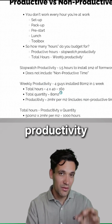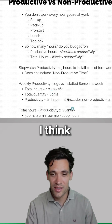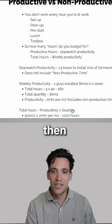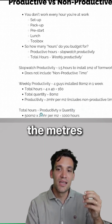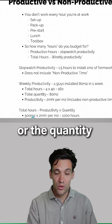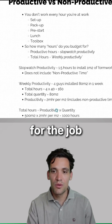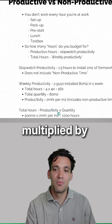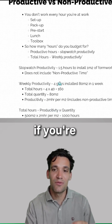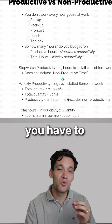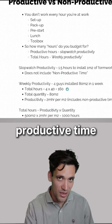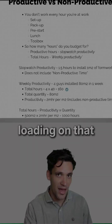Therefore, if you're using weekly productivity — which is, I think, the better method — then your total hours would just be the quantity for the job multiplied by the productivity rate. If you're using stopwatch productivity, you have to include a non-productive time loading on top of that.